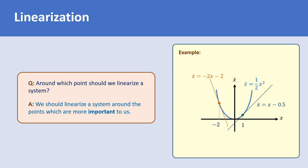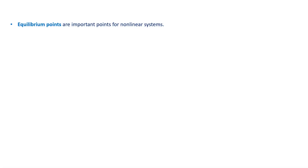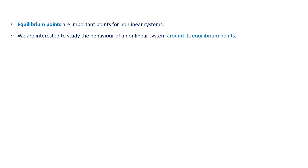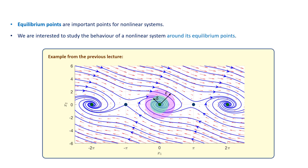We learned in the previous videos that equilibrium points are important points for nonlinear systems and that we are interested to study the behavior of a nonlinear system around its equilibrium points. Remember from the lecture on phase portrait that we used the stability definition, phase portrait, and vector field diagram to study the stability of equilibrium points of the pendulum system with friction. It would be much easier if we could approximate this system around its equilibrium points and then simply use linear control theory.